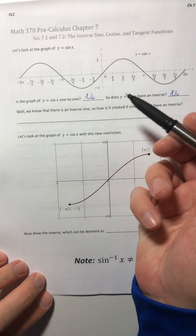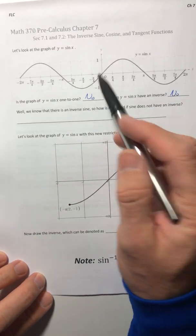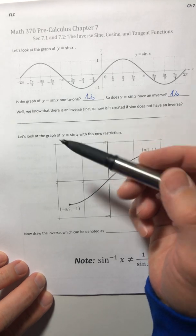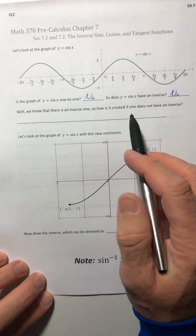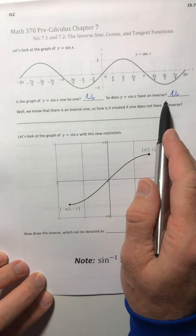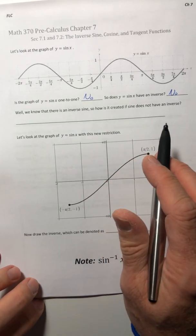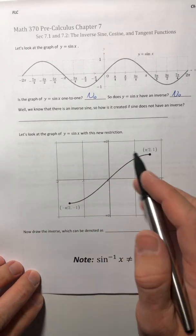Well, in your last class in trig, like you worked with inverse sine, cosine, and tangent. Like we know they exist. So how is that possible? So like, how do you have an inverse sine if we're saying no, it doesn't have one? Well, we can kind of sneak our way around it.